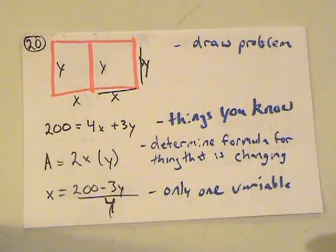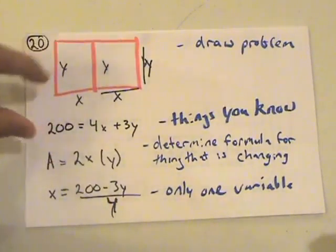So here's problem 20. Problem 20 asks that a rancher has 200 feet of fencing and he wants to enclose two rectangular corrals, and we have to find the dimensions that enclose the area that makes it maximum. So that these two corrals have the maximum area when we use 200 fencing.